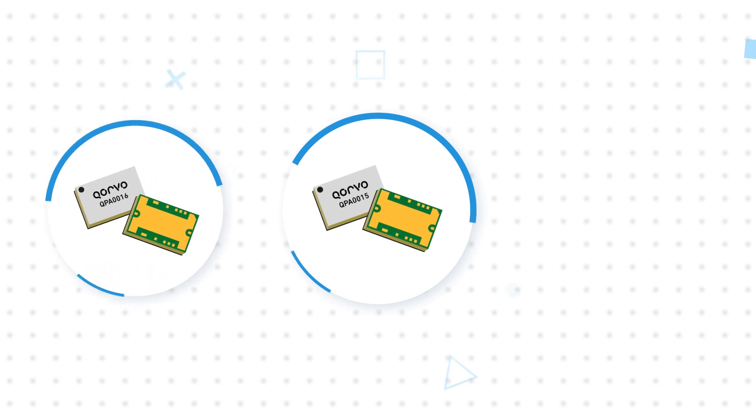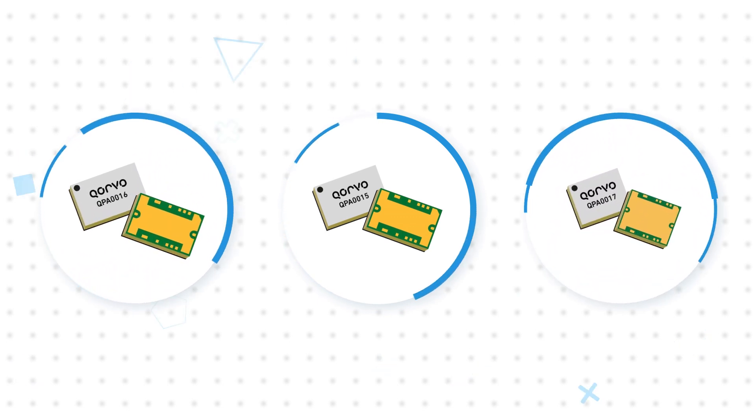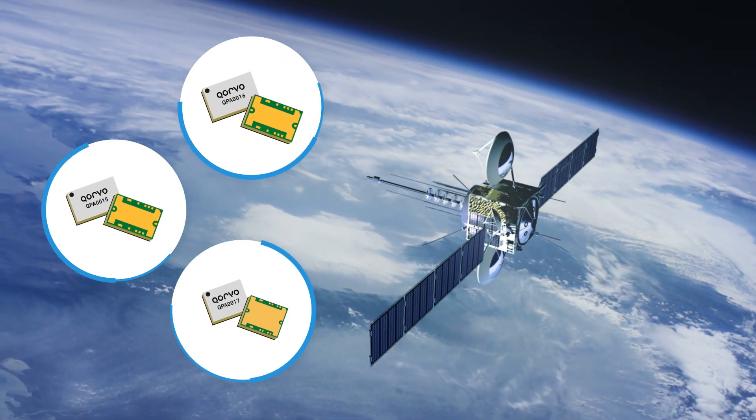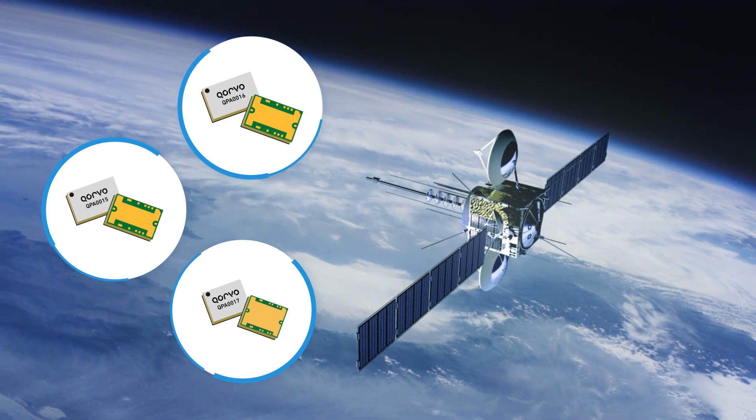Corvo's QPA0015, 0016, and 0017 deliver 8, 15, and 25 watts of power respectively, with up to 35 dB small signal gain and up to 35% power added efficiency.